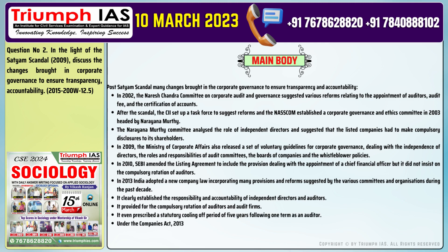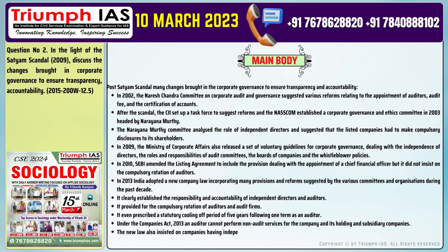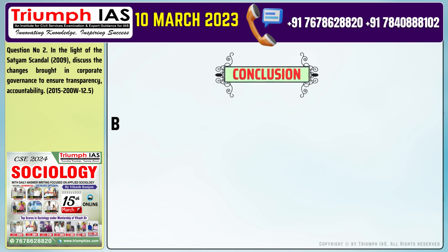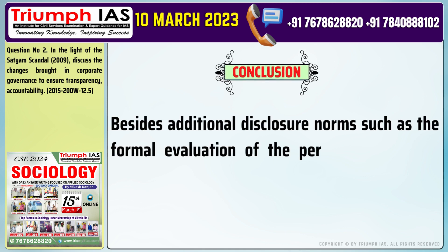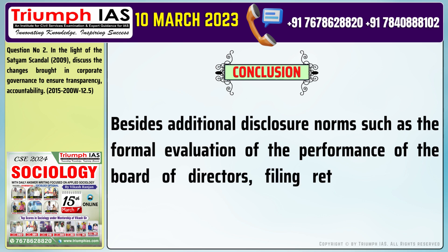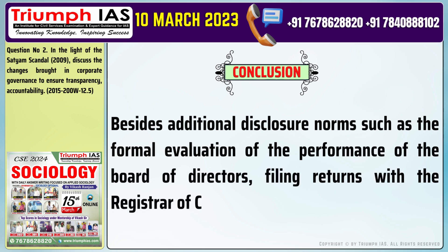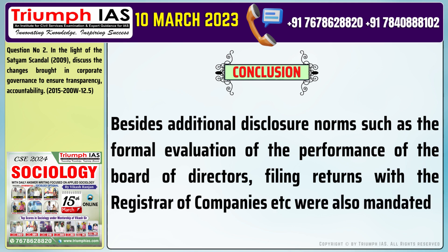Number 10: Under the Companies Act 2013, an auditor cannot perform non-audit services for the company and its holding and subsidiary companies. Number 11: The new law also insisted on companies having independent directors — at least one-third of the board of a company has to consist of independent directors. The conclusion: besides additional disclosure norms such as the formal evaluation of the performance of the board of directors, filing returns with the registrar of companies, etc., were also mandated.